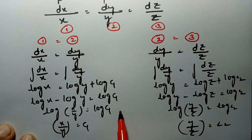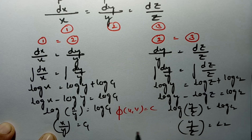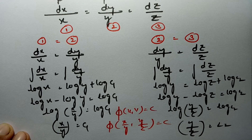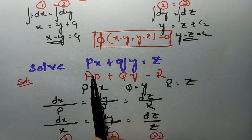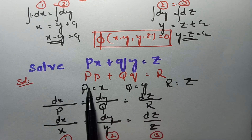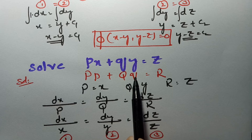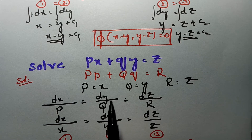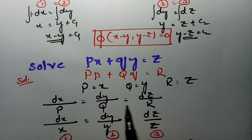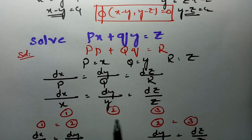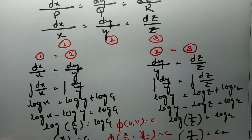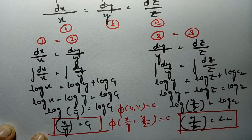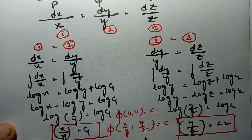So the general solution is φ(x/y, y/z) = 0. To summarize: we identify it as Lagrange's linear equation, transform into dx/P = dy/Q = dz/R, substitute P = x, Q = y, R = z, equate pairs of equations and solve to get x/y = c₁ and y/z = c₂, then write the general solution as φ(x/y, y/z) = 0.